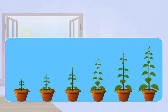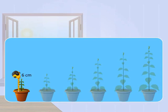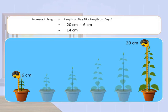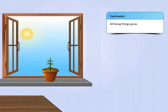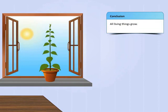Now, to see by how much the length of the plant has increased over four weeks, subtract the length you observed on day one from the length observed on day 28. From these observations, we infer that all living things grow if provided with suitable conditions and proper nutrition.